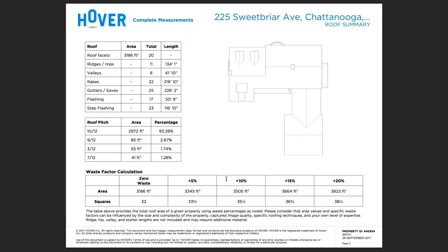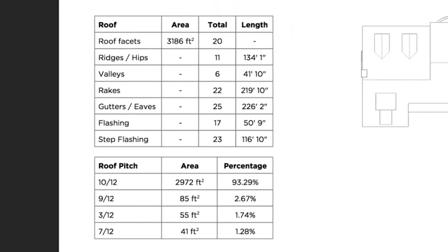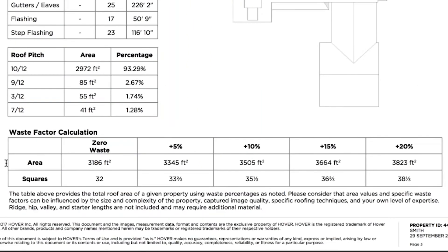The roof summary page will provide you all the relevant roof information. In the top left-hand corner, you'll find the roof facets, square footage, and total facet count. We'll then provide you the total counts of individual line segments and the linear footage. The roof pitch table will give you the four predominant pitches on the structure. Later in the report you will find every pitch that exists on the structure in a table. At the bottom, we'll find a waste factor calculation table to facilitate your waste factor calculation.